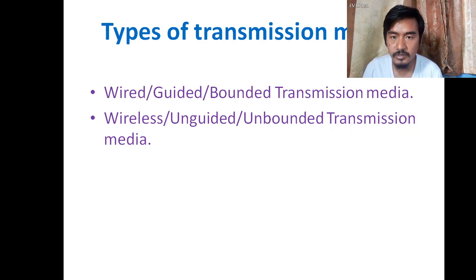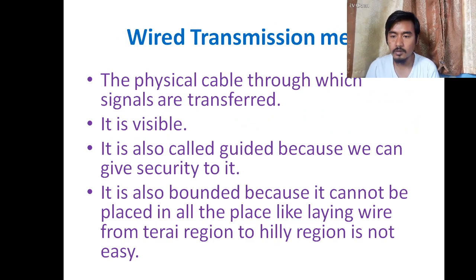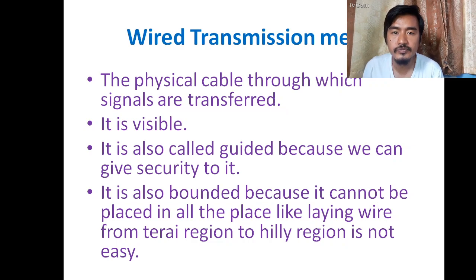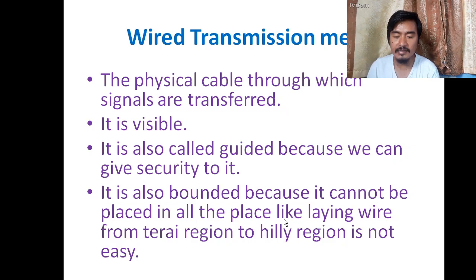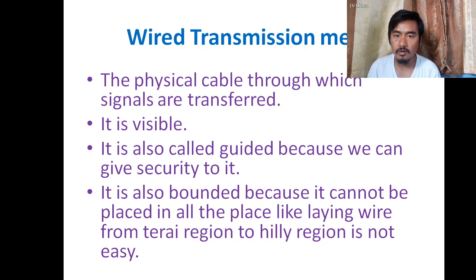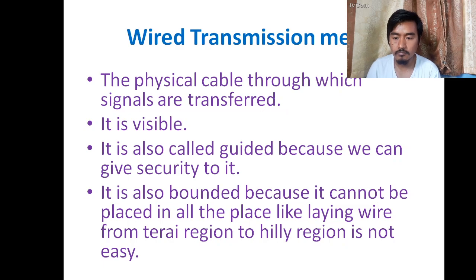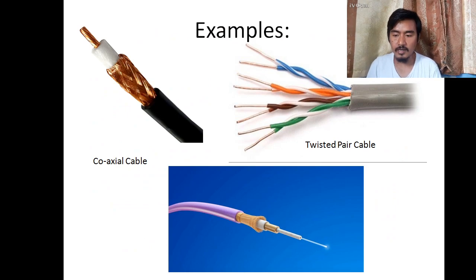So there are two types of transmission media: wired and wireless. Wired transmission media is the physical cable through which signals are transferred — it is a physical cable which we can see with our eyes. It is also called guided because we can give security to it, and bounded because it cannot be placed everywhere, like laying wire in hilly regions is not easy.